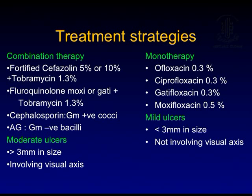There are two treatment strategies advocated. One is combination therapy — at our center we start with fortified cefazolin 5% plus tobramycin 1.3% (also fortified). In centers in the south, fluoroquinolone — moxifloxacin or gatifloxacin — is started with tobramycin 1.3%. This is because cefazolin or fluoroquinolone covers gram-positive cocci and aminoglycoside covers gram-negative bacilli.